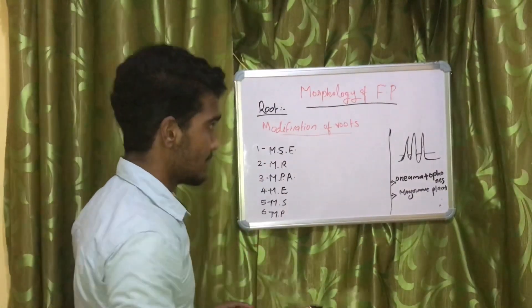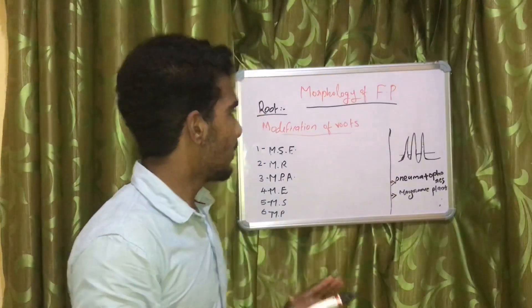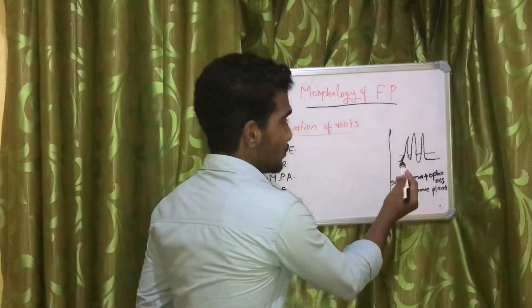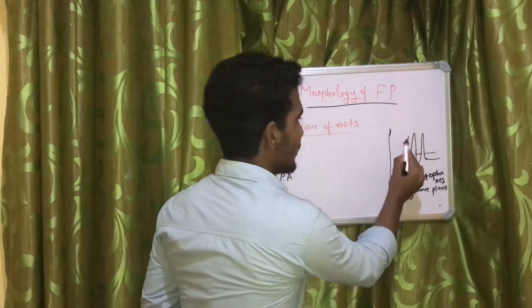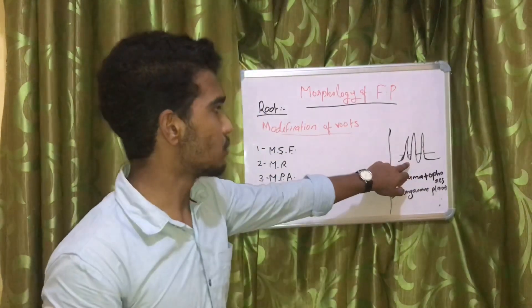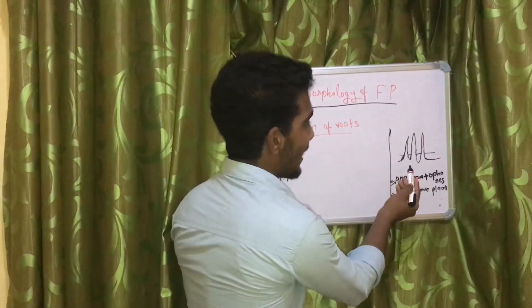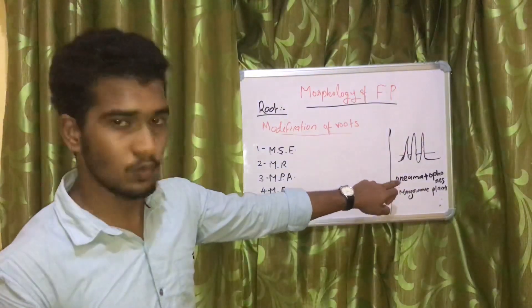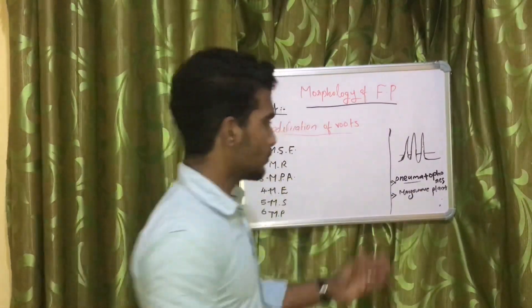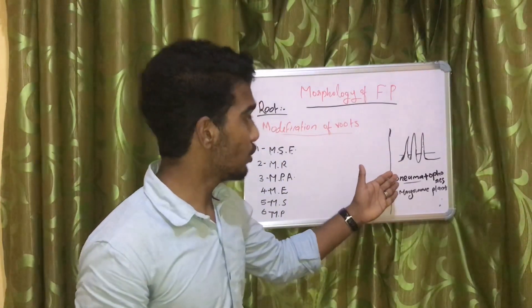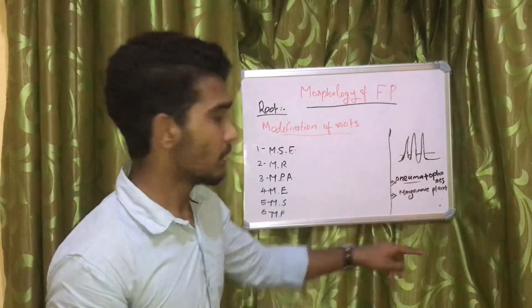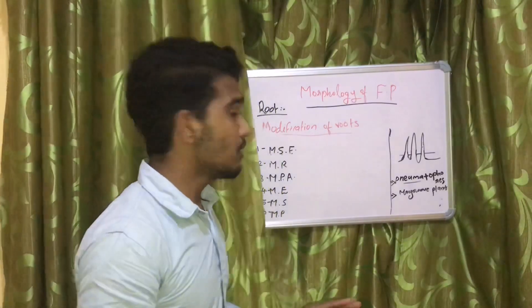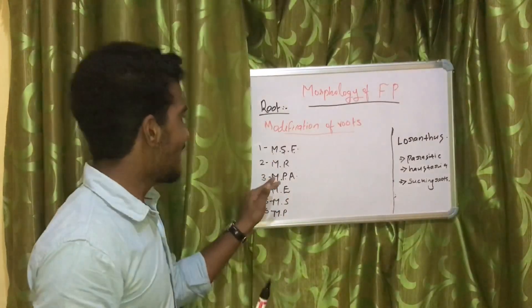The second modification is for respiration. If roots perform a respiration function, that is called modification for respiration. These roots have a special structure and arise from beneath the soil above the soil surface. These types of roots are called pneumatophores, found in mangrove plants, which grow in marshy areas.